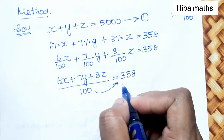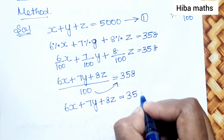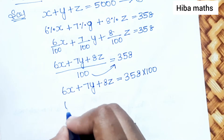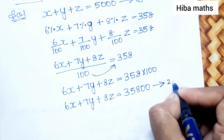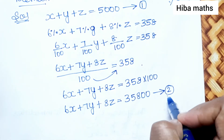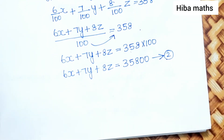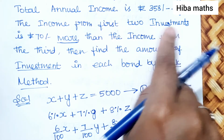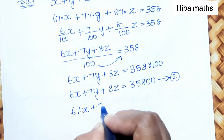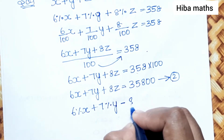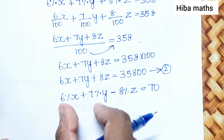So 6X plus 7Y plus 8Z equals 35,800. This is the second equation. Now for the third condition: the income from the first two investments is 70 more than the income from the third bond. So 6% of X plus 7% of Y minus 8% of Z equals 70.